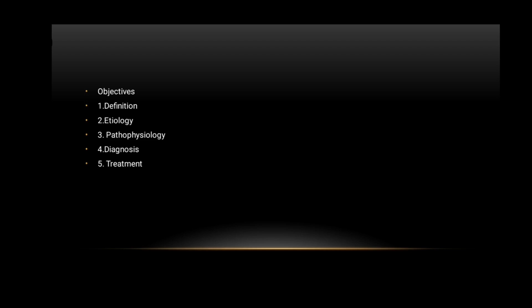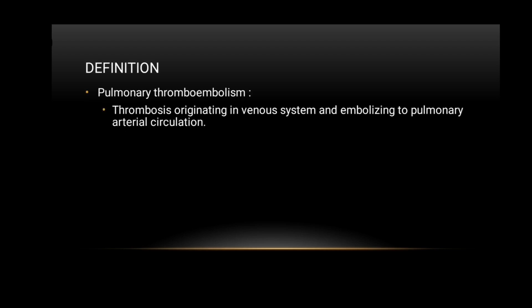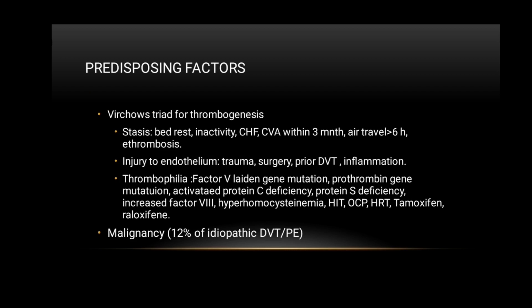Pulmonary thromboembolism is a thrombosis originating in the venous system and embolising to the pulmonary arterial circulation. Virchow's triad for thrombogenesis includes stasis, injury to endothelium, and thrombophilia.